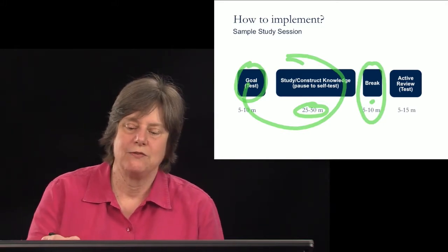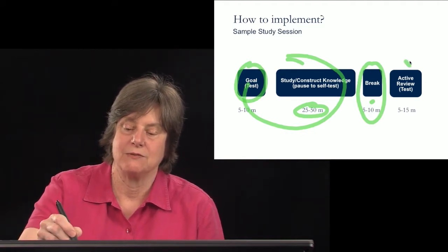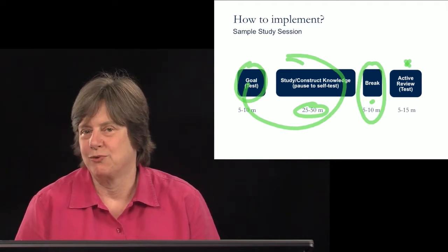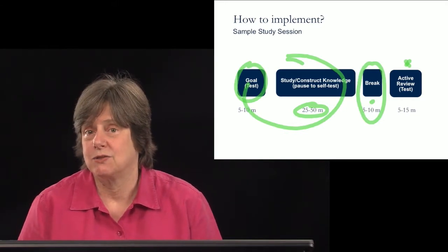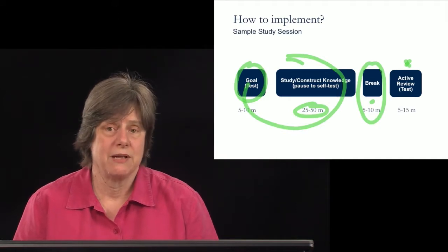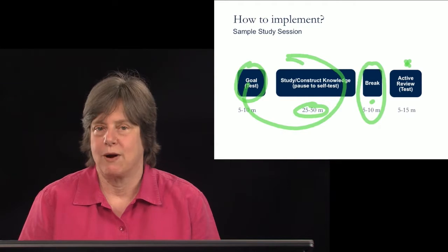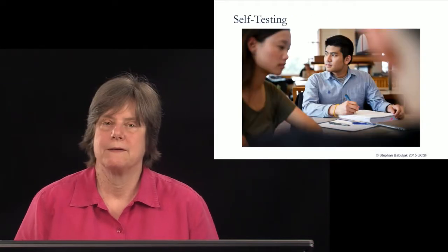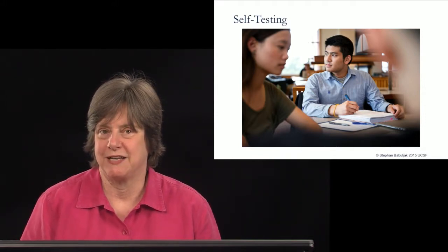After you've done the diffuse mode, you come back to the active review. For many undergraduates, that means reading over what you highlighted — but that is not a particularly effective approach. Instead, take a blank sheet of paper, a notebook, or a blank page on your computer and write out your understanding of what you've just studied. With self-testing, pre-testing is a particularly effective technique.